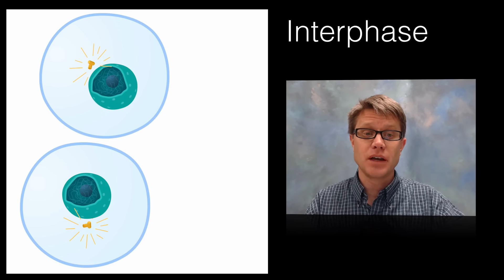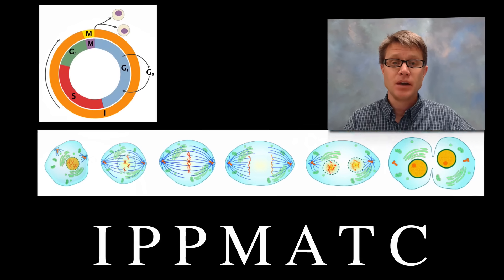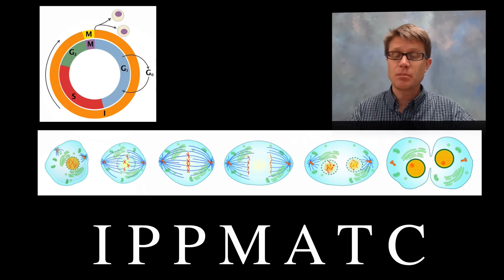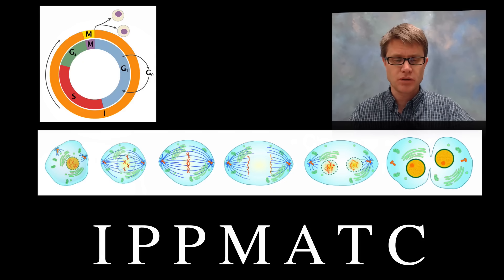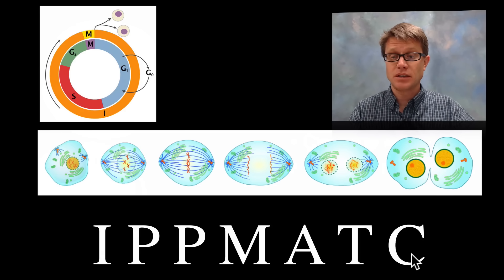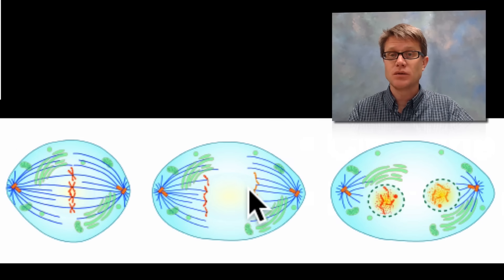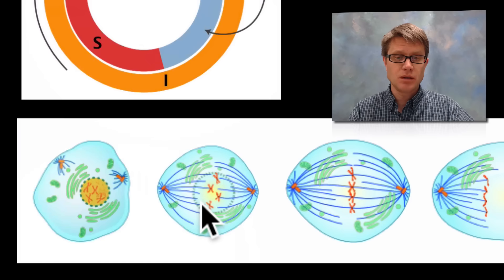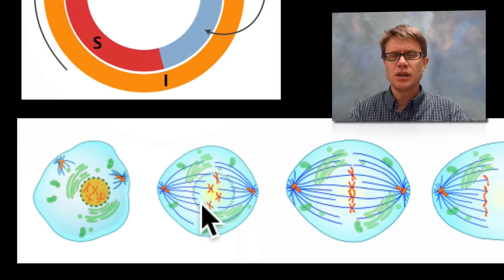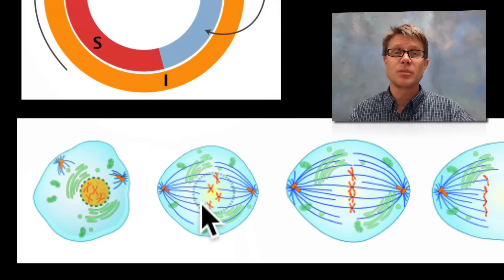Eventually both cells go back into interphase and the cell cycle starts again. The way I ask students to remember the order is IPMATC. Remember that interphase is technically not part of mitosis, and neither is cytokinesis at the end. You should be able to point at each phase — for example, this one with chromatids moving apart is anaphase, and the one with the nuclear envelope exploding is pro-metaphase. That's mitosis — it equally divides the DNA into daughter cells and allows all the cells in your body to replicate.